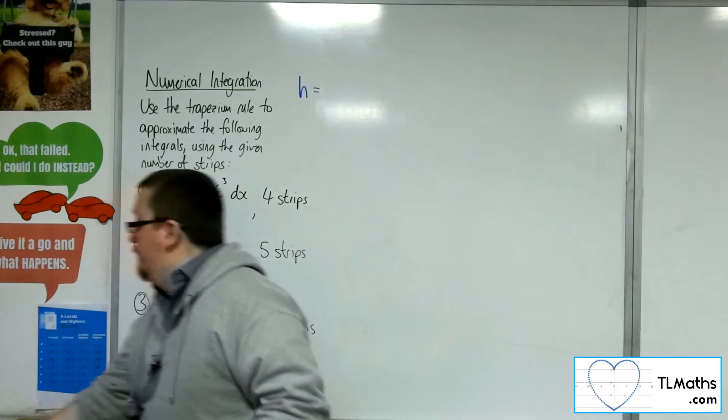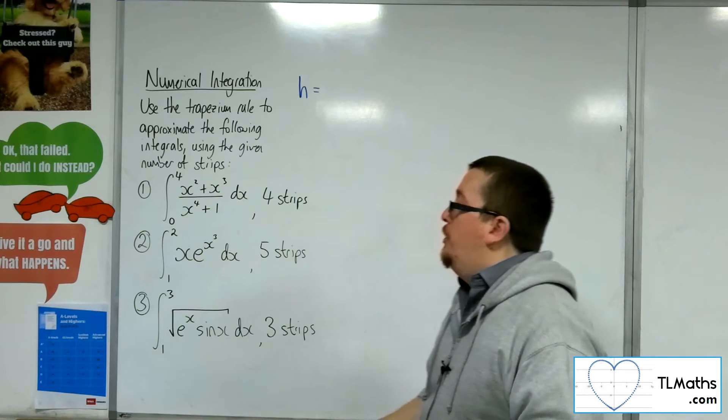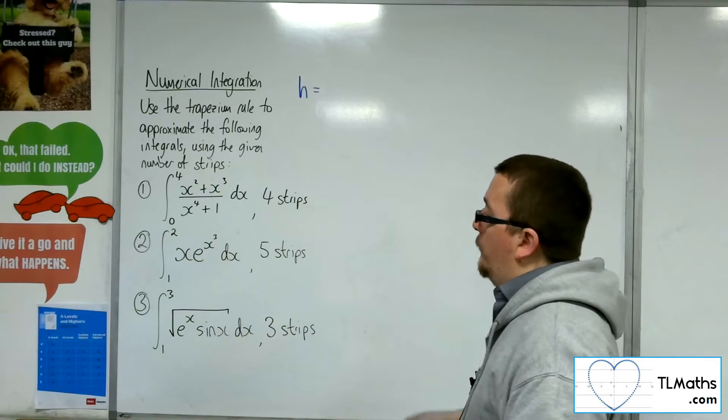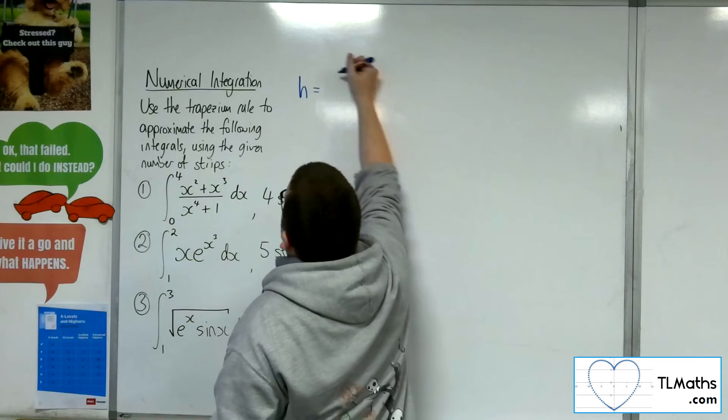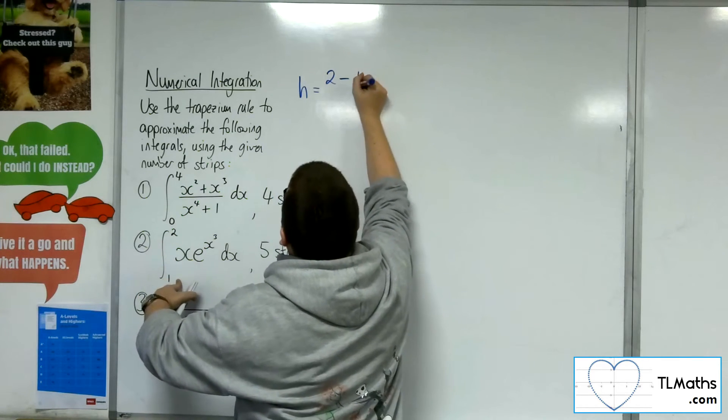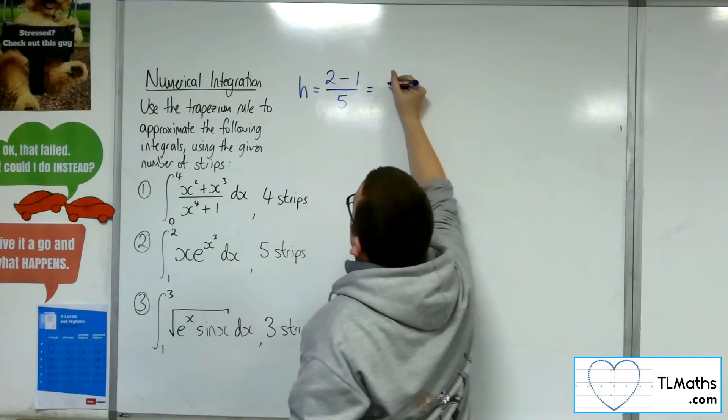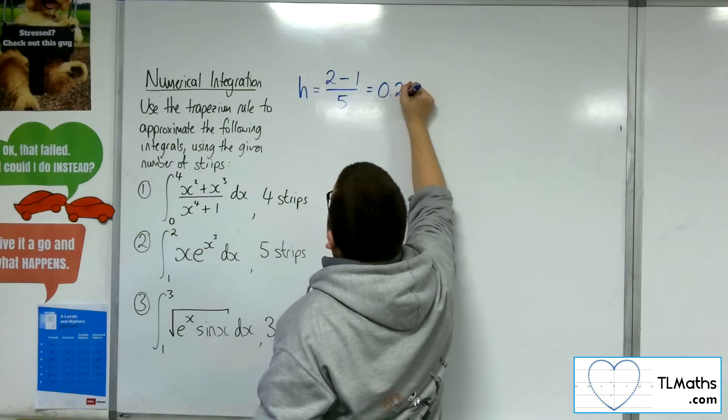So number 2. We've got the integral of 1 to 2 of xe to the x cubed dx with 5 strips. So first thing to work out the strip width. So 2, take away 1, and then divide by 5. So that's 1 fifth. So 0.2.